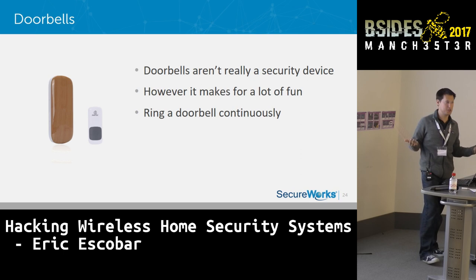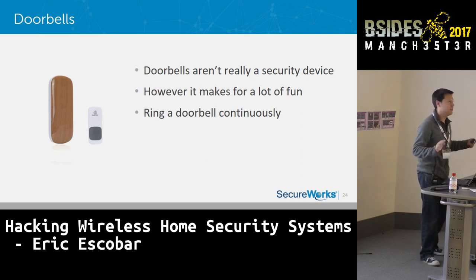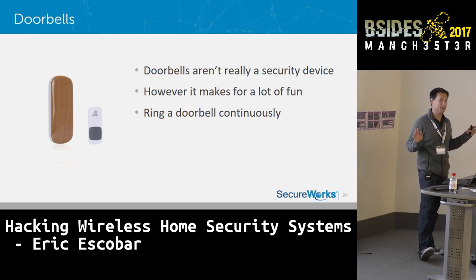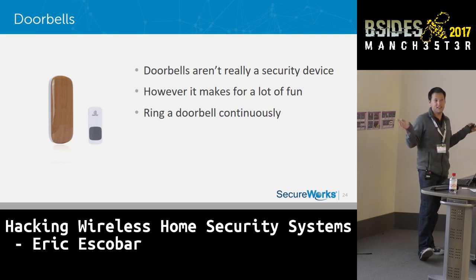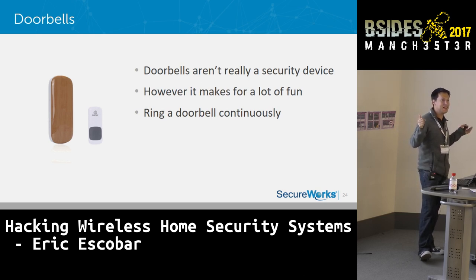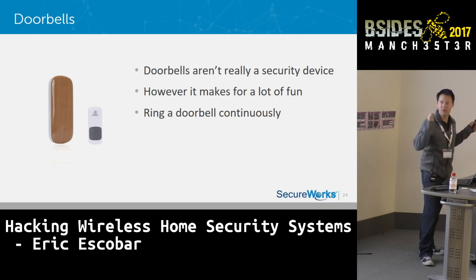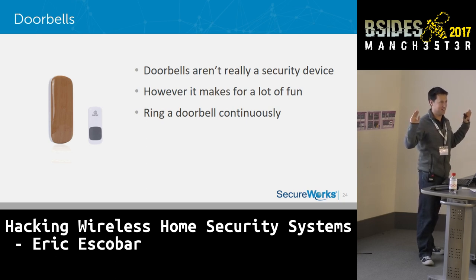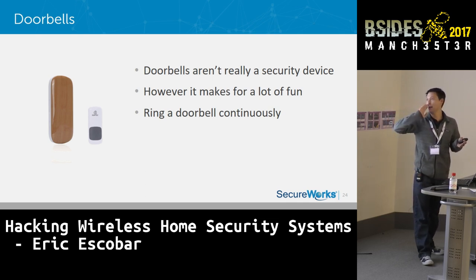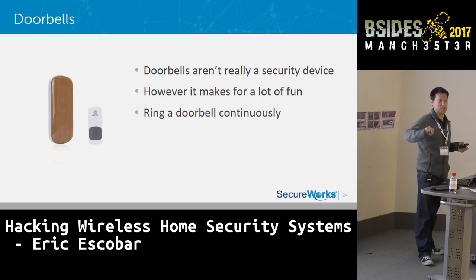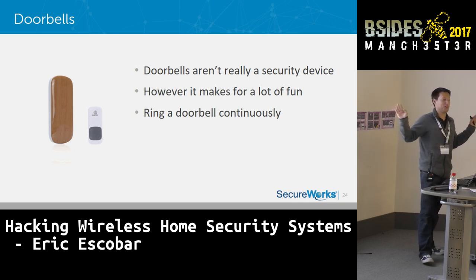Doorbells are also vulnerable. This makes for a hilarious prank — you can doorbell ditch someone from a couple hundred yards away and mercilessly ring their doorbell. They can stand right next to their doorbell and you can still ring it and they'll have no idea how it's happening. For less than $200 — or just a transmitter and your laptop — it's almost worth it for the prank alone.